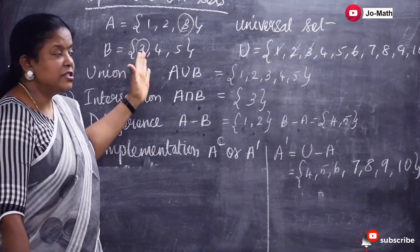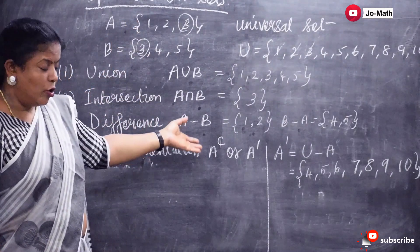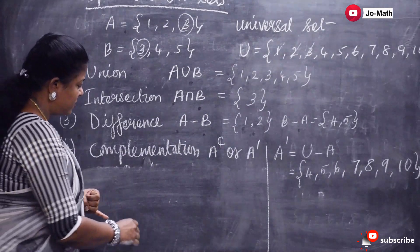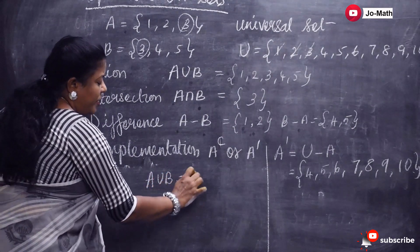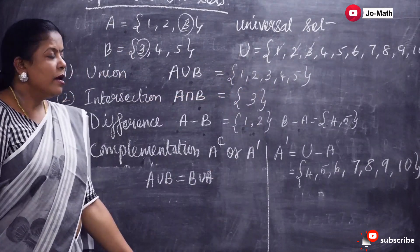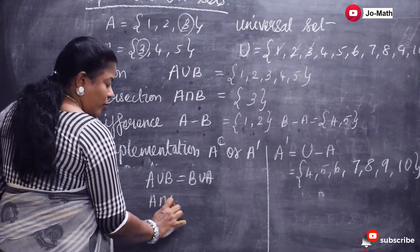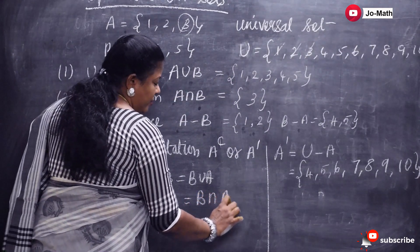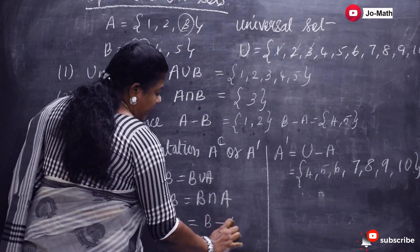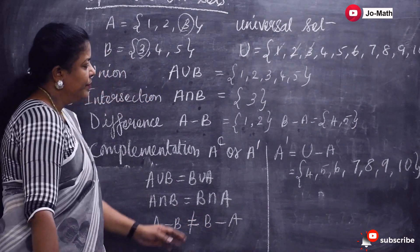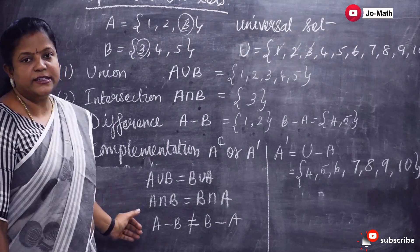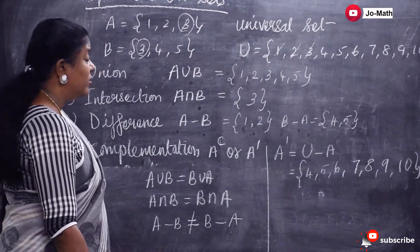And then we learnt the properties of the operations on sets. The first property is commutative property. That is, A union B is equal to B union A — if you take B union A also you will get the same answer. And A intersection B is also commutative — B intersection A and A intersection B are equal. But A minus B and B minus A are not equal; here A minus B is {1, 2} and B minus A is {4, 5}. So set difference is not commutative.